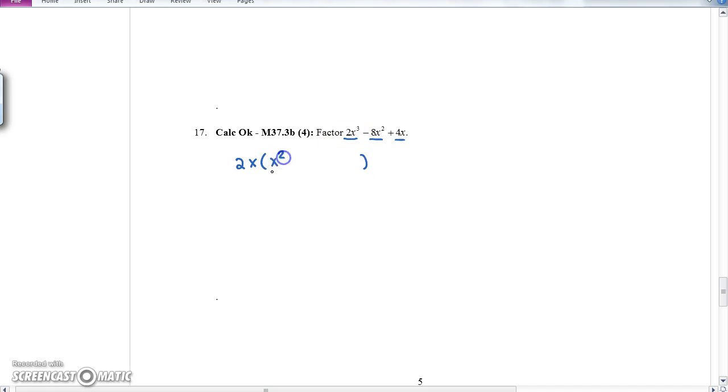First term becomes x squared, because when I multiply 2 times x squared, I get what I started with. The next term will be negative 4x. And the last term would be 2, but in the board, I changed this last term to 8. So now we're looking at plus 4.